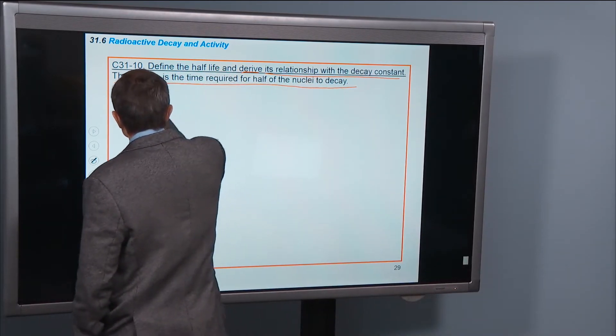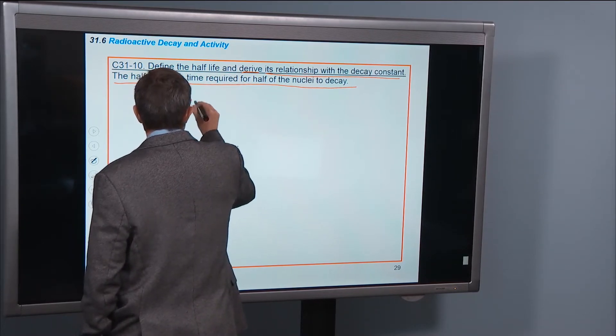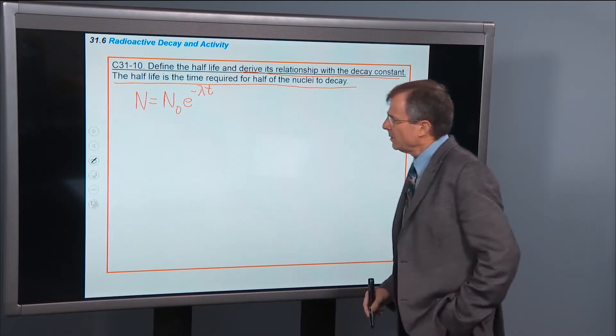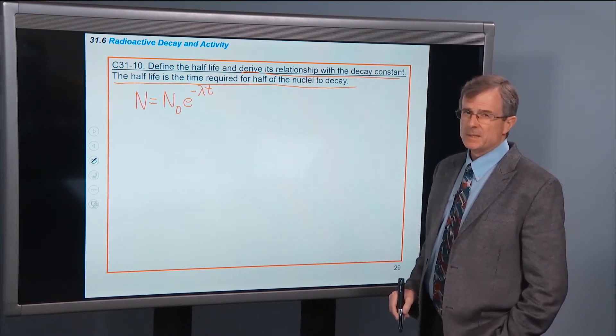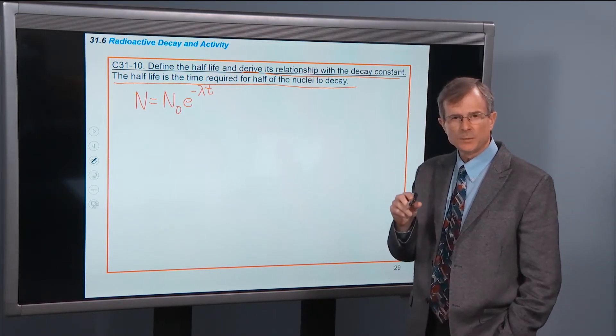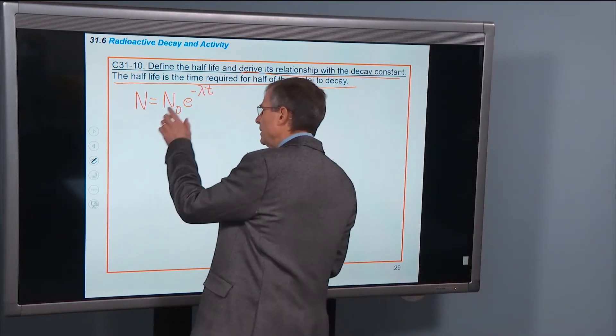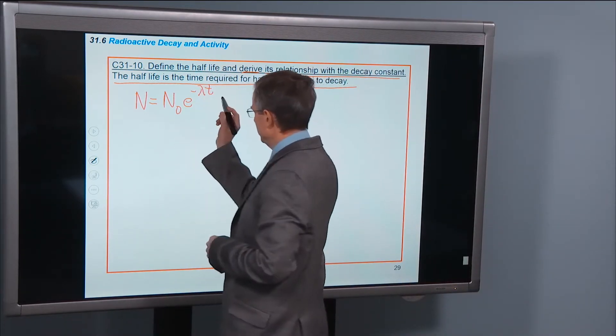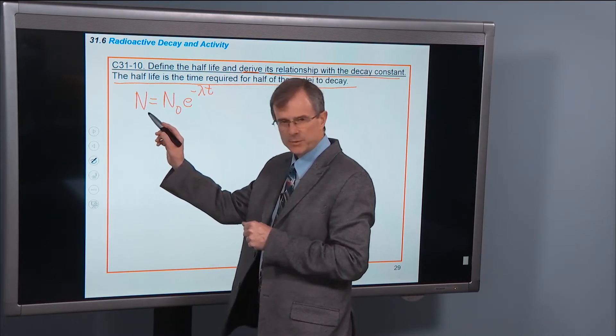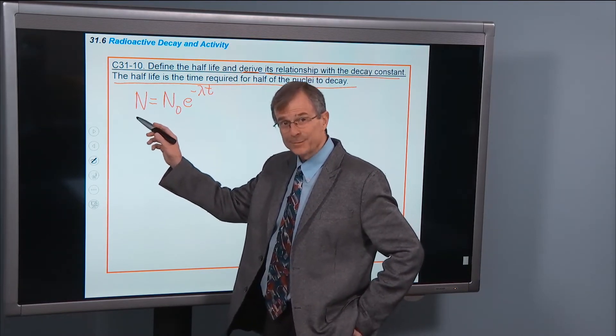So here's the equation. And we're going to apply this between time t equals 0 and time t equals a half-life, t 1 half. Well, when t is equal to the half-life, then at that time, as we showed in the previous slide, n has to be 1 half of n0.